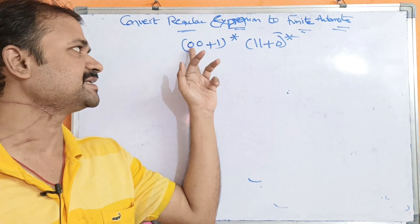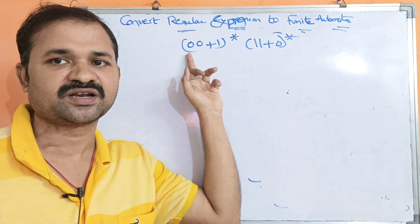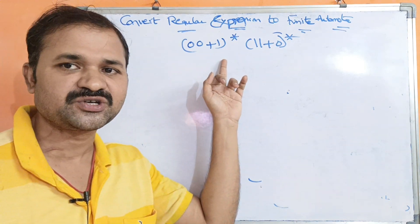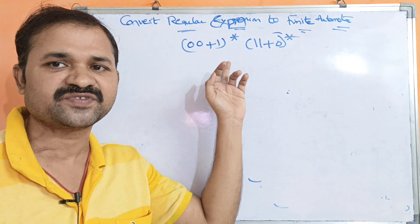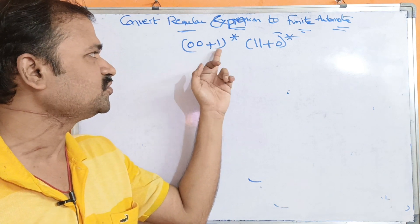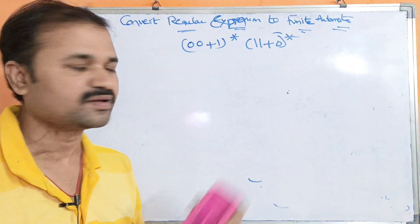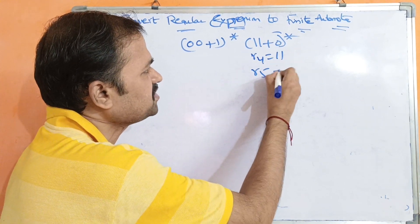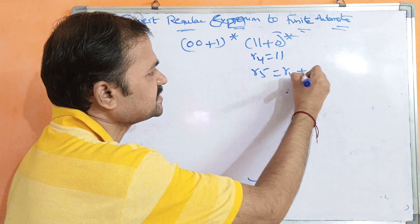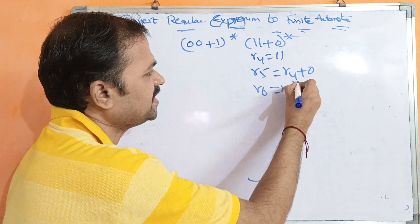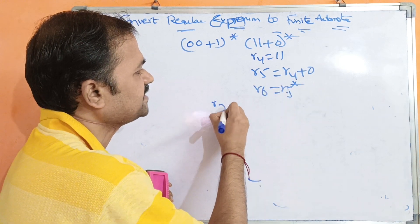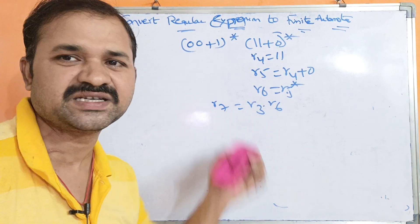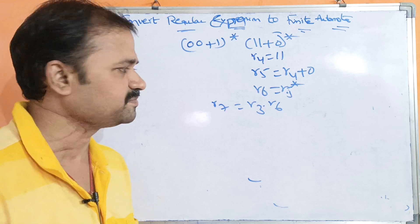We can break this down: R1 = 00, R2 = 00 plus 1, R3 = R2 star, R4 = 11, R5 = R4 plus 0, R6 = R5 star, and R7 = R3 concatenated with R6. We can represent this with seven diagrams, but for space we will combine them into a single diagram.